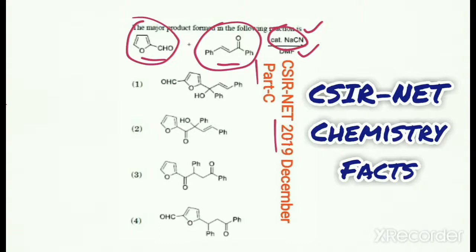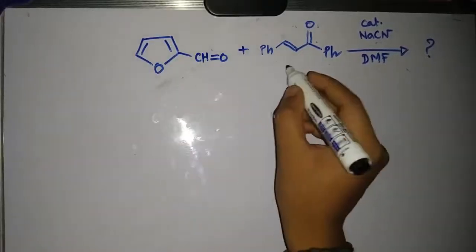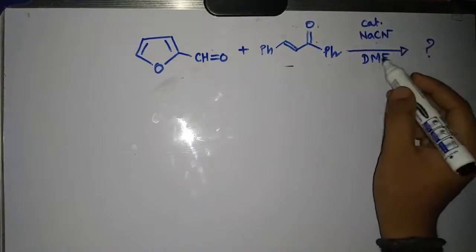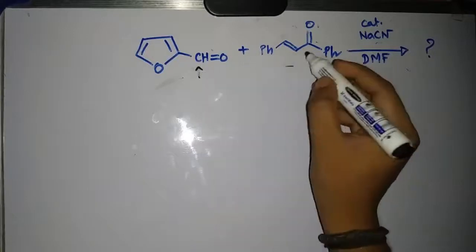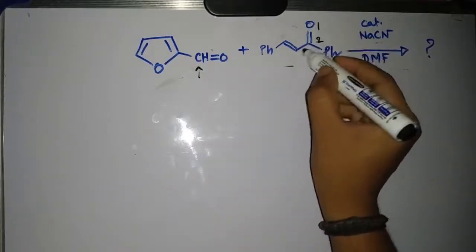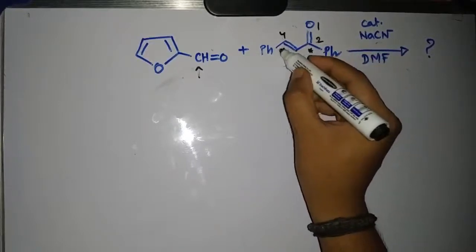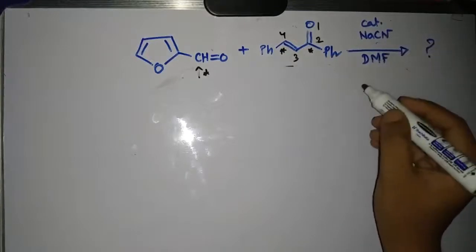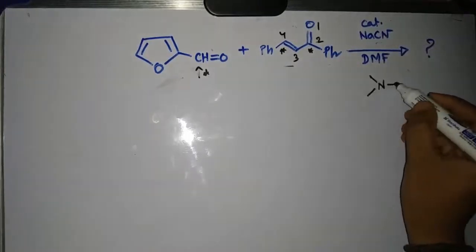Let's start this mechanistic analysis and see which one will be the correct answer. This is the starting material and here you can see sodium cyanide is given in DMF solvent. This is the electrophilic center and at positions 1, 2, 3, 4 — positions 2 and 4 are also electrophilic centers. So there are three electrophilic centers. The sodium cyanide is present in DMF, which is a polar aprotic solvent.